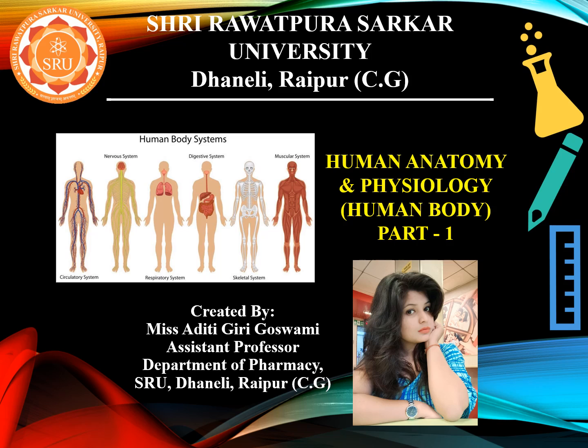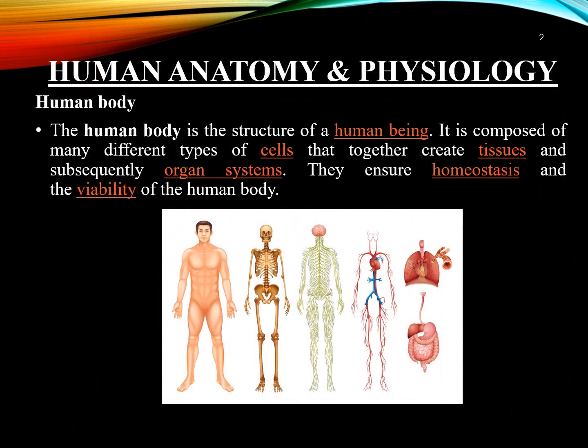Let's start with what is anatomy. Here in this animation we will discuss about the human body. The human body is the structure of a human being. It is composed of many different types of cells. Cell is a basic structural and functional unit of life. Cells together create tissues and subsequently organ systems, which function together to carry out the complex overall functions of the human body.